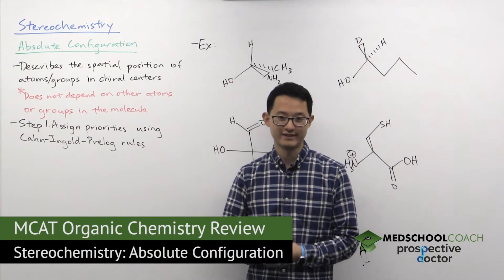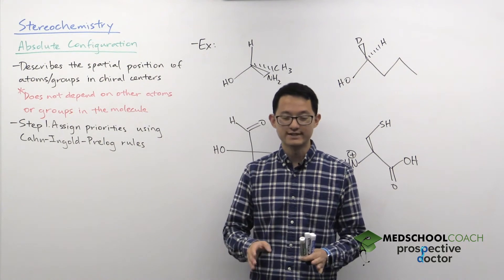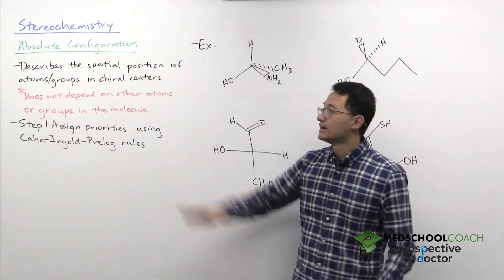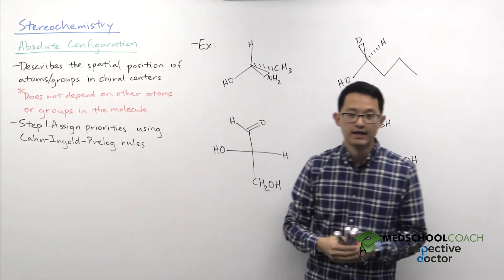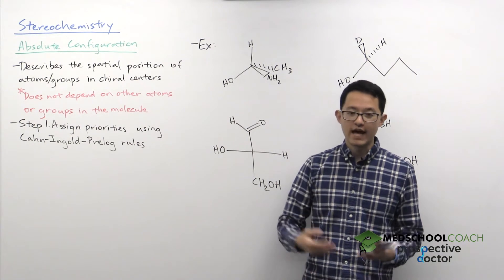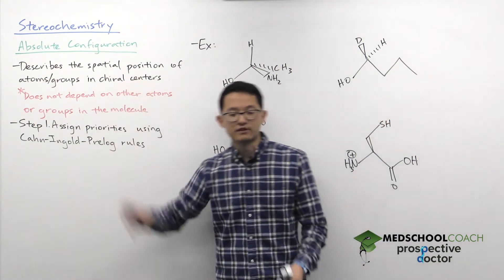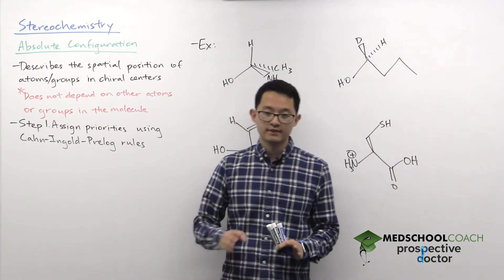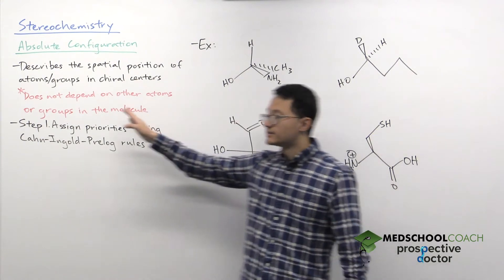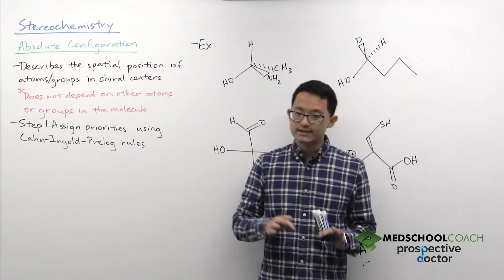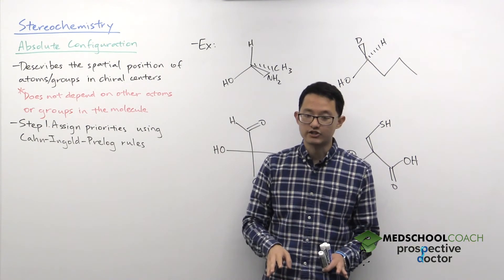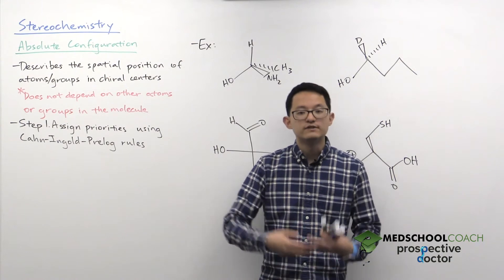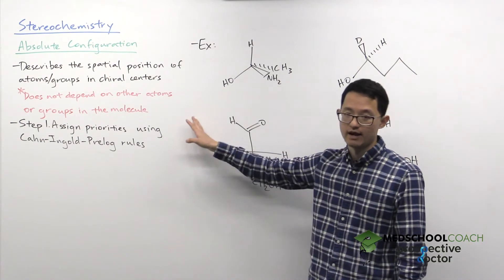In this video we're going to go over absolute configuration. This is a difficult topic for a lot of students, so hopefully this video is going to be able to help you out. Absolute configuration is a way for us to describe the spatial position of atoms or groups in a chiral center. As you'll recall from one of our previous videos, chiral centers are atoms that are bound to four different substituents, and absolute configuration refers to designating each chiral center as an R or S configuration. Absolute configuration does not depend on other atoms or groups in the molecule. This is different from relative configuration, where you assign the configuration based on the position of one group relative to other groups in the same molecule.